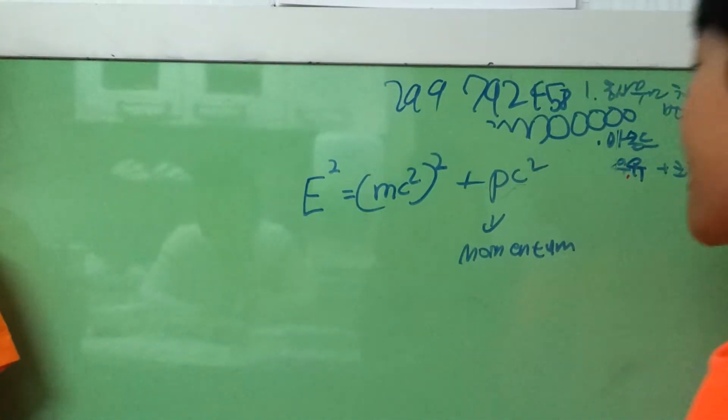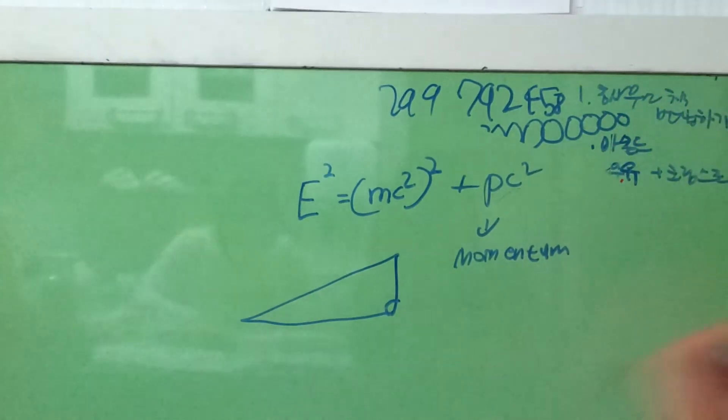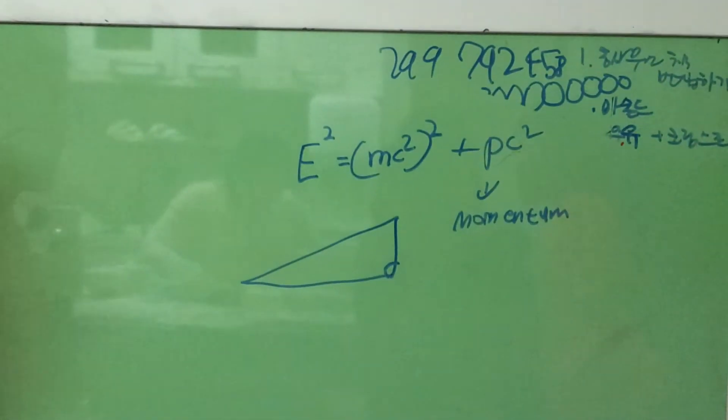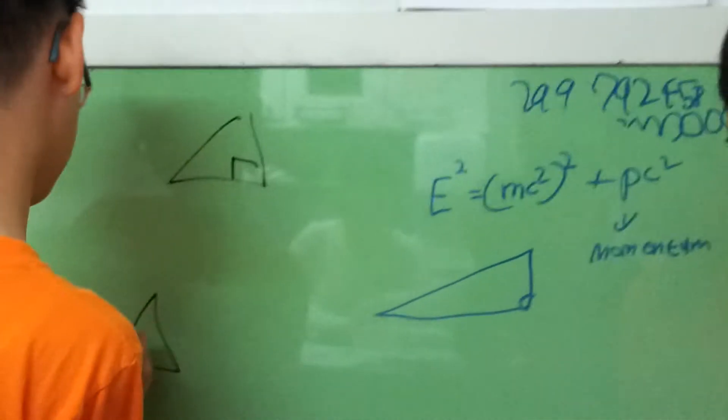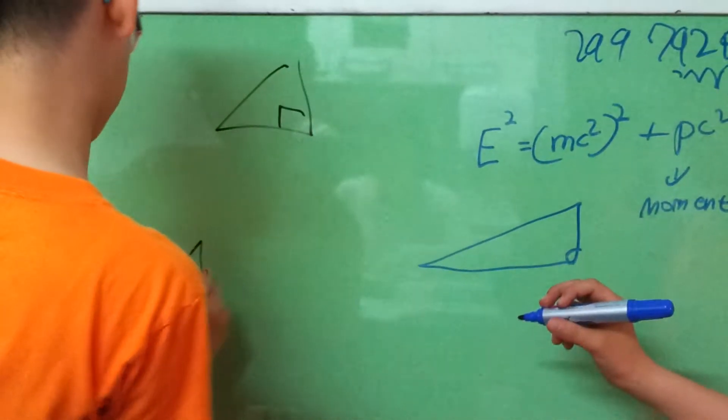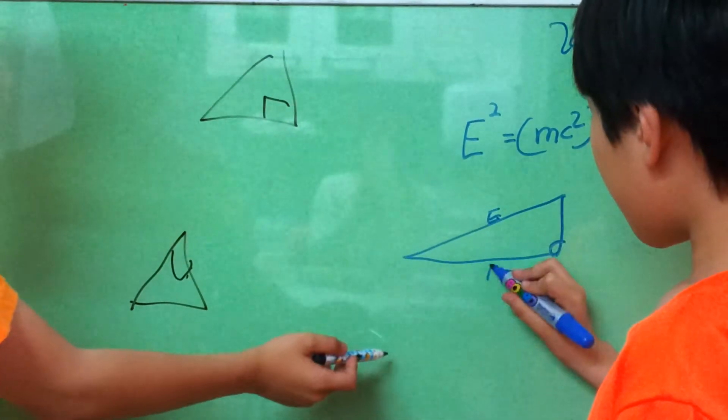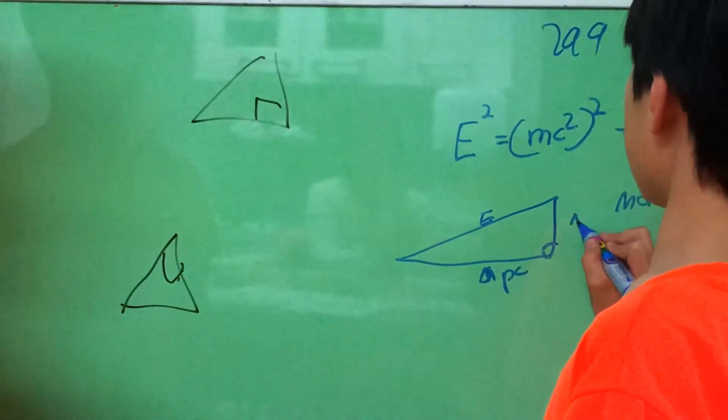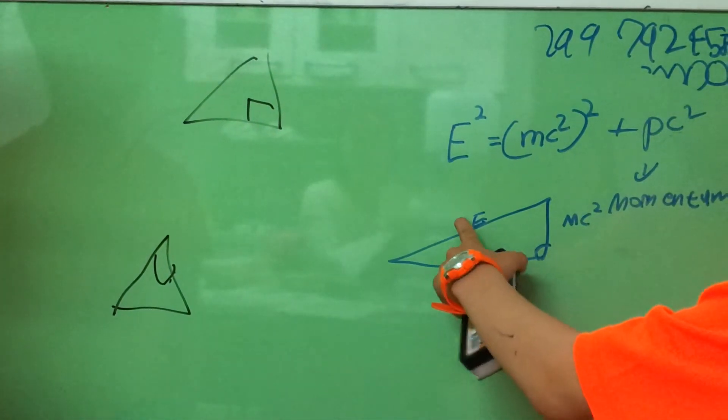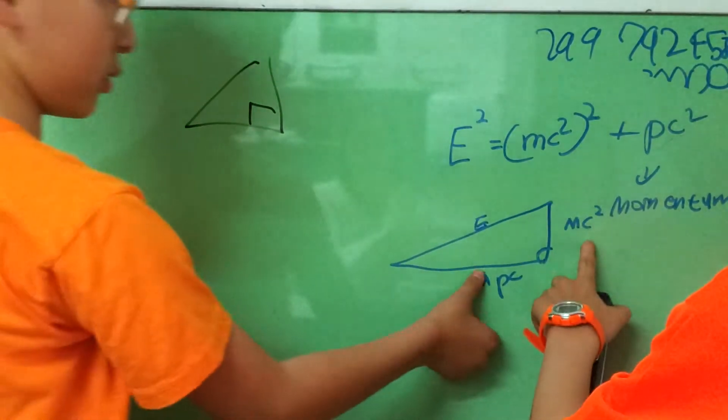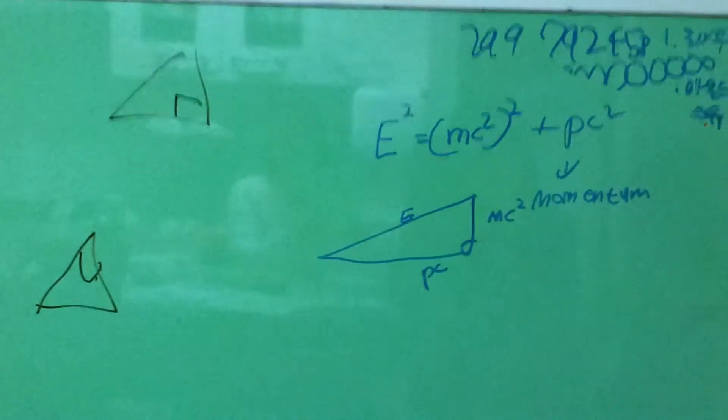What I'm going to do is that you can make this triangle. Now, you will know that using the Pythagorean theorem, you can get E squared equals mc squared, squared, plus momentum times the speed of light squared.